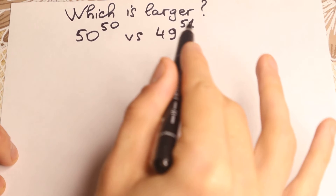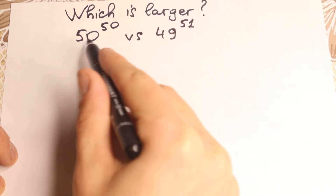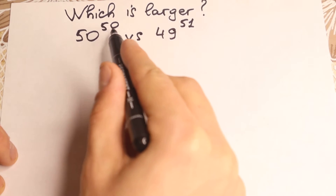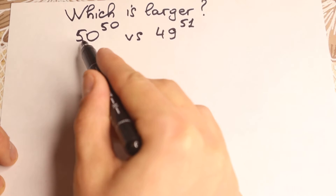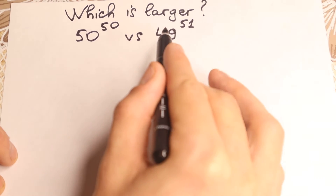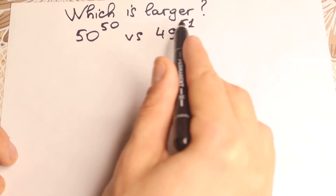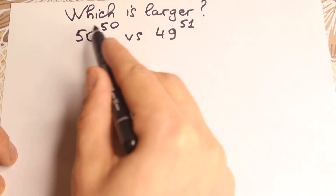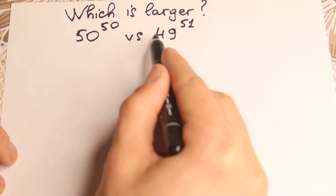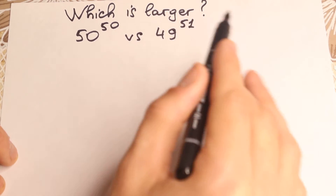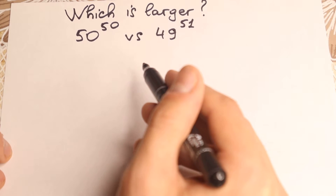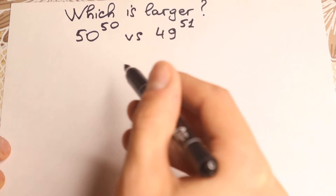As you can see, there are no common properties between 50 and 49 or between the powers, because we have an even number base, odd number base, even power, odd power. So it's kind of hard to simplify our right hand side — odd number, odd power, it's not good. In this video I'm going to show you a really interesting approach.